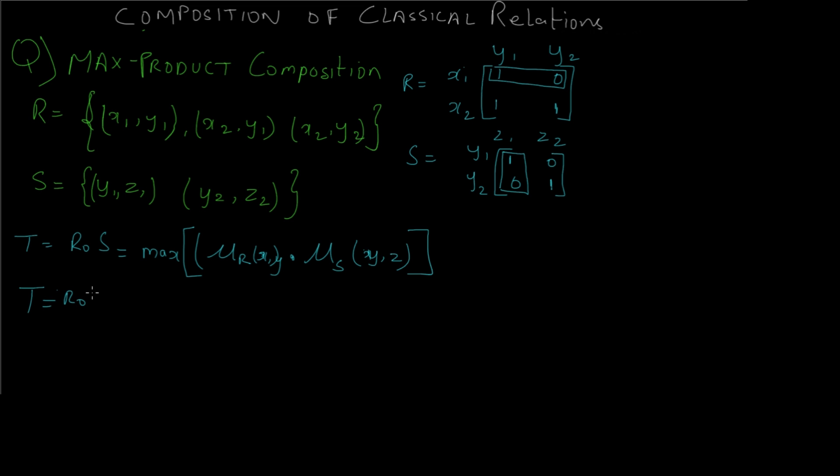So the final answer, that is T which is equal to R∘S of (x₁,z₁), would be max of multiplication of this value and this value. So 1·1 and multiplication of this value and this value, so it would be 0·0.